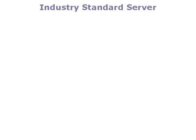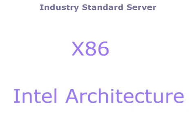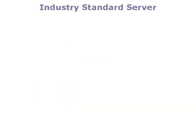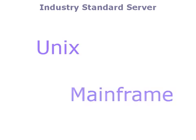The type of servers we are covering are often referred to as industry standard. They can also be referred to as x86 or Intel architecture. These terms all refer to the way in which Intel and IBM originally architected the PCs from which these servers evolved back in the early 1980s. There are other server types you may have heard of, such as Unix servers and mainframe servers. These are not covered here.